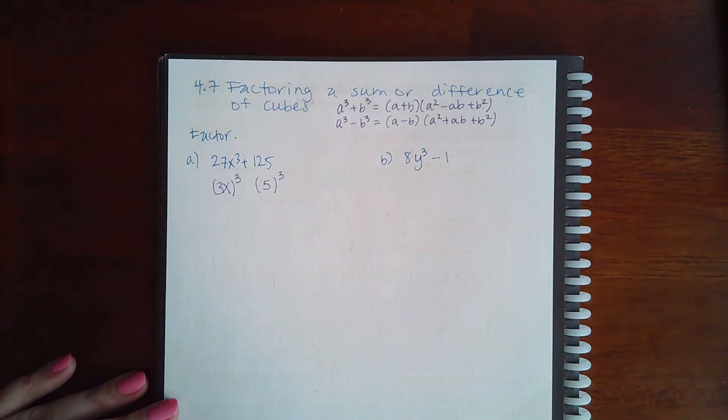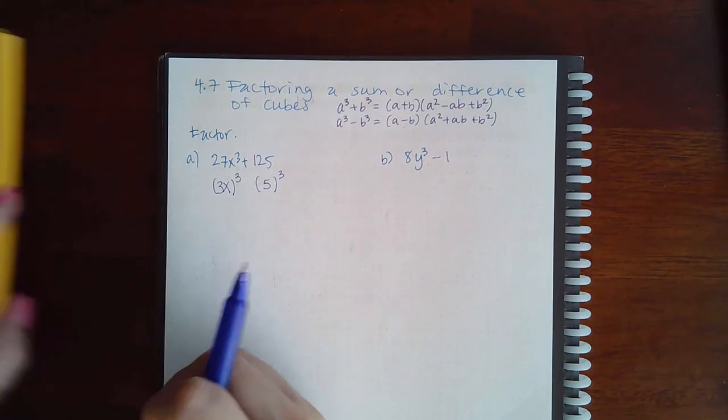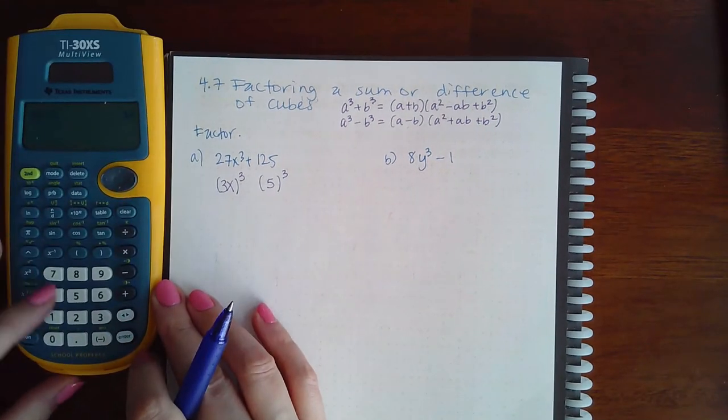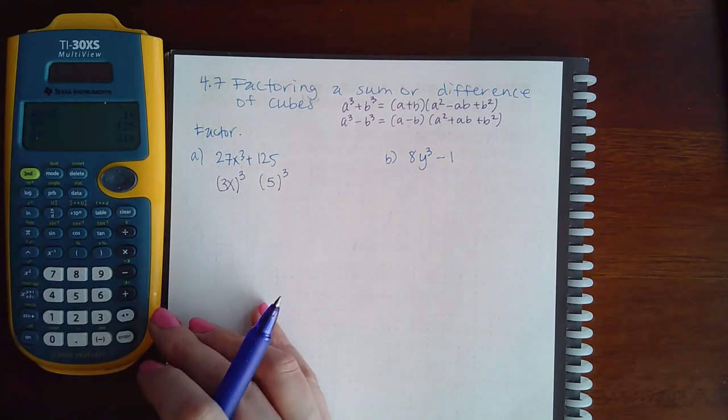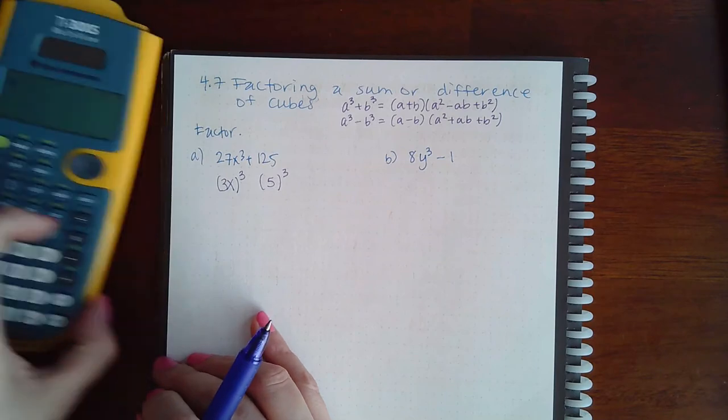If you don't know your cubes, you can always use your calculator to verify. You can sit there and do 5 to the third power, 6 to the third power, and so on and so forth until you get the one that works.